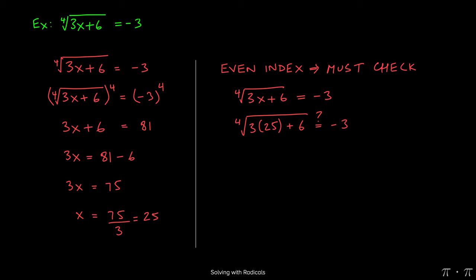3 times 25 yields 75. 75 plus 6 yields 81. So really, the whole problem on the left-hand side simplifies to the fourth root of 81, which we know to be 3.